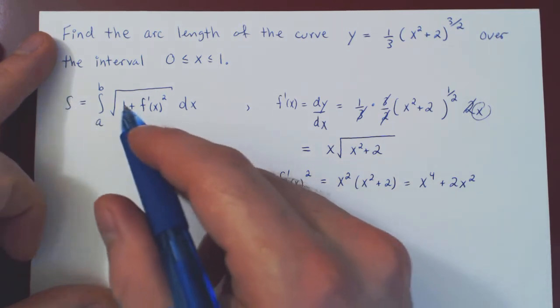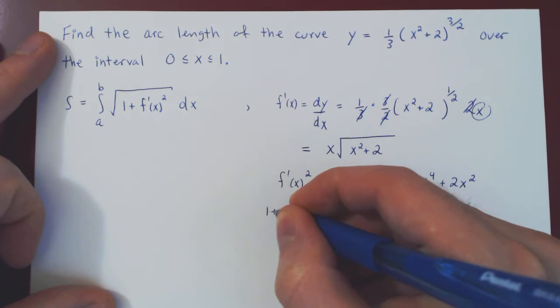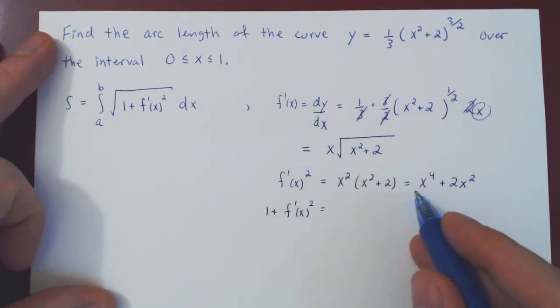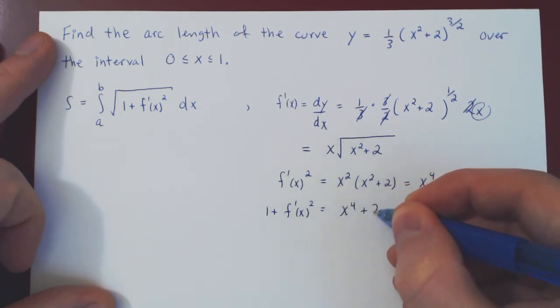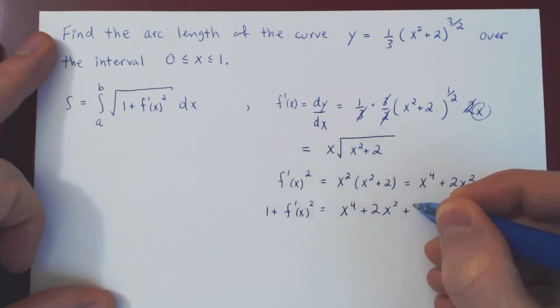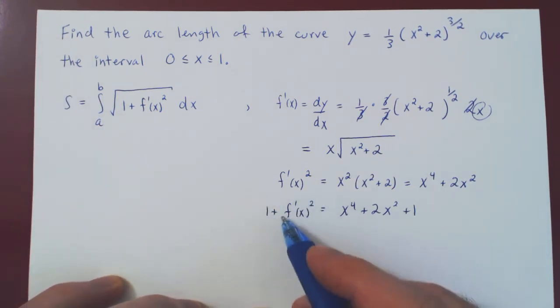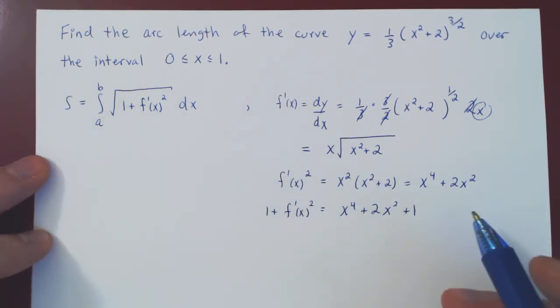And finally, we want 1 plus f prime squared. So 1 plus our derivative squared, we simply are adding 1 to both sides. So we'll get x to the 4 plus 2x squared plus 1. So now that we have calculated 1 plus the derivative squared, and it's fully simplified, then we can plug in and try to evaluate the arc length of our curve.